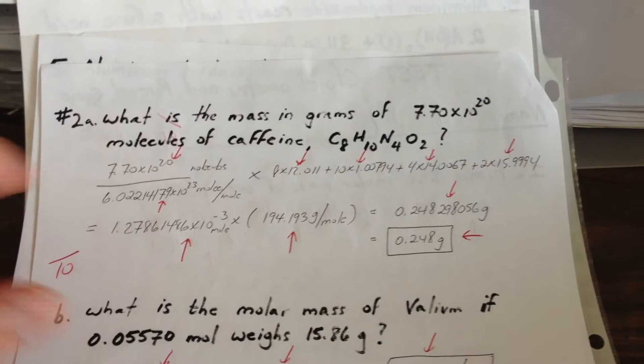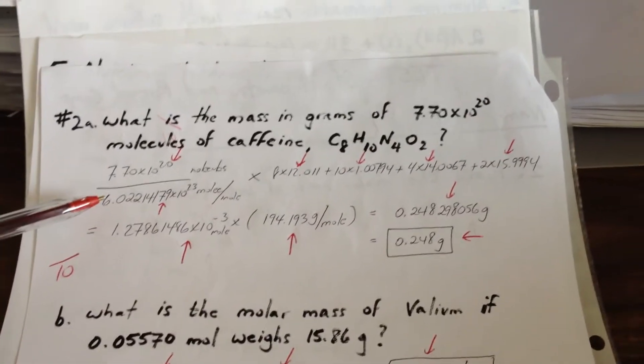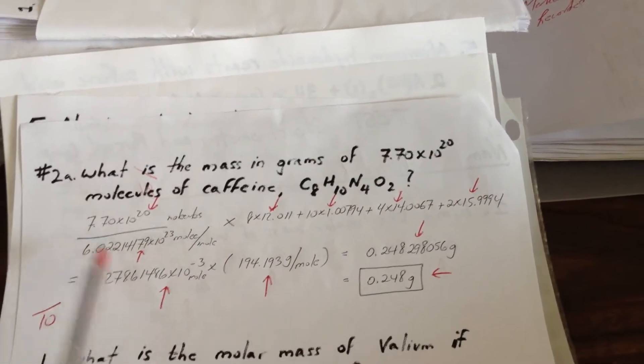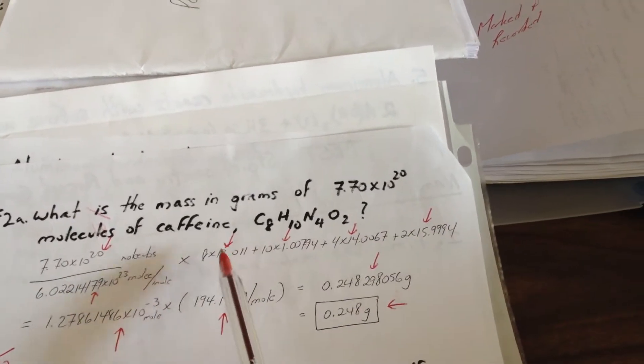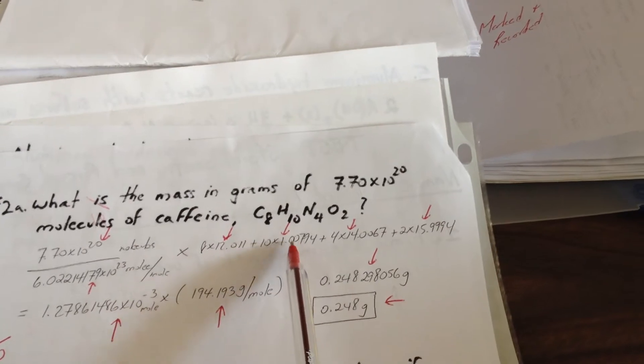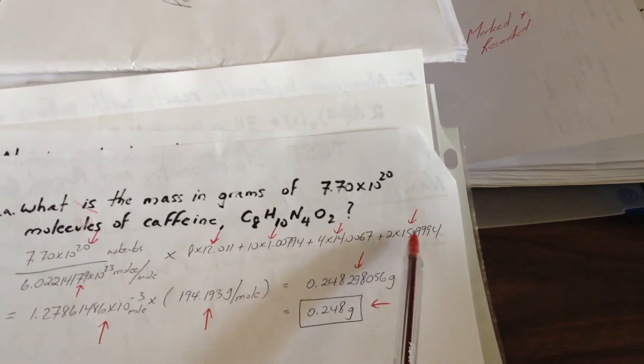Here's the number of molecules. Here's the number of molecules per mole. So that tells us how many moles we have. This calculation here tells us how many moles. Then we multiply by the molar mass. Here are the various components. Here's the carbon. Here's the hydrogen. Here's the nitrogen. Here's the oxygen.